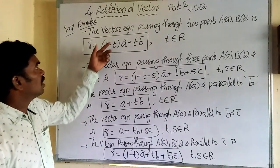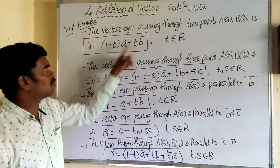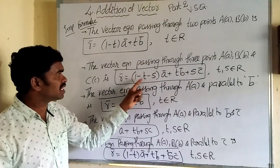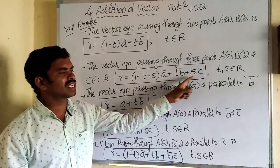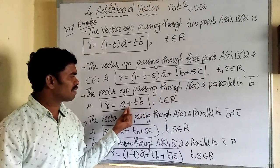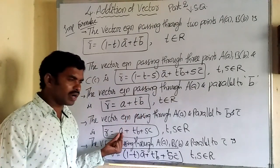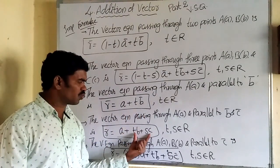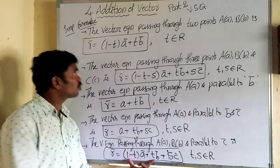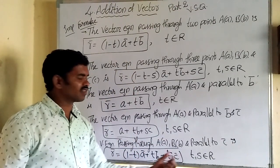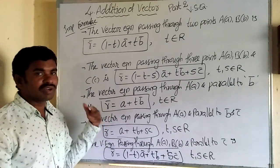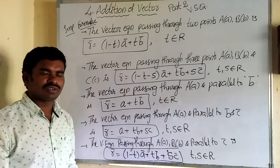Quick summary of formulas: passing through two points → (1 − t)a + tb; passing through three points → (1 − t − s)a + tb + sc; passing through one point parallel to a vector → a + tb; passing through one point parallel to two vectors → a + tb + sc; passing through two points and parallel to a vector → (1 − t)a + tb + sc. With these, we can apply any question without confusion.